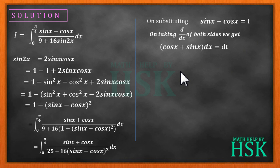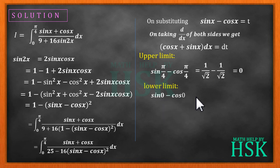The value of upper limit will change to sin pi by 4 minus cos pi by 4, equal 1 by root 2 minus 1 by root 2 or 0. The value of lower limit will change to sin 0 minus cos 0, equal to 0 minus 1 or minus 1.